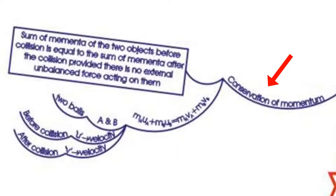Conservation of momentum. Sum of momenta of two objects before collision is equal to the sum of momenta after the collision provided there is no external unbalanced force acting on them.